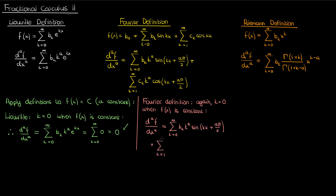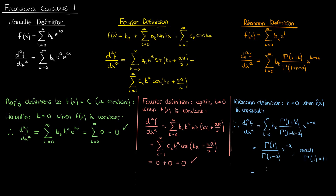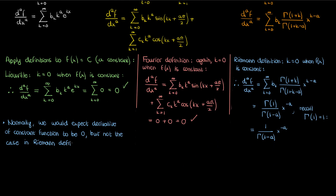However, when we apply the Riemann definition of the fractional derivative, the fractional derivative of a constant function — corresponding to k equals 0 — gives this expression on the right. Recall from the properties of the gamma function that gamma evaluated at 1 is just 1, the same as 0 factorial. Therefore the ath order fractional derivative of a constant according to the Riemann definition is 1 over gamma of 1 minus a, times x to the negative a. So the Riemann definition doesn't give zero for the derivative of a constant, unlike the Liouville and Fourier definitions.